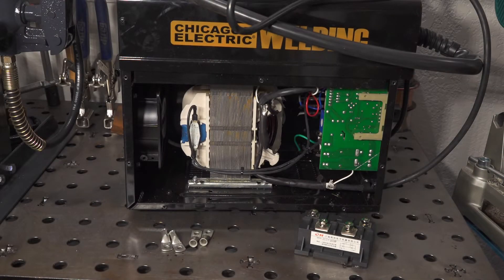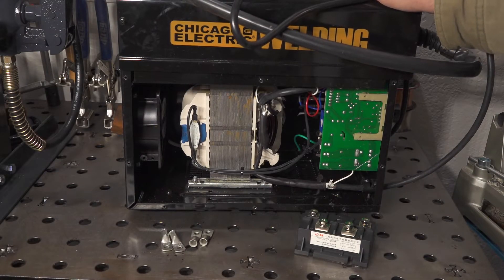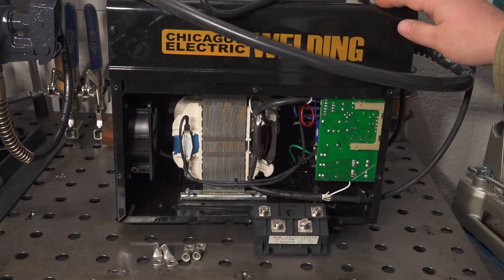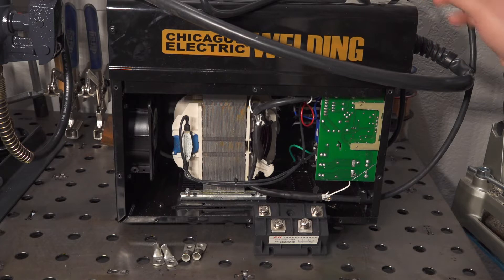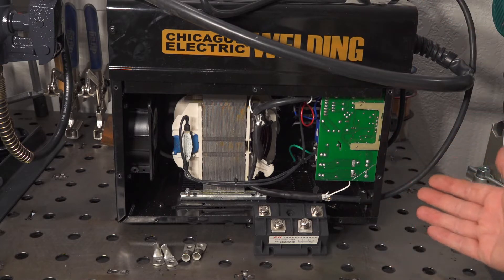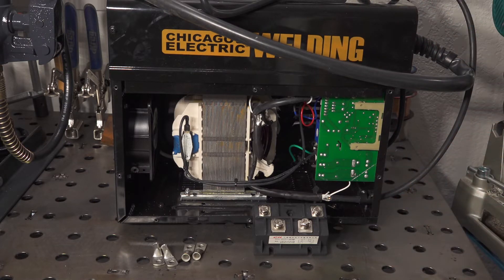Hello folks, out here in the garage again messing around with the 125 amp flux core welder from Harbor Freight. I've already done some videos showing some testing of this welder and I talked about the AC output and how I think that's holding it back quite a bit.